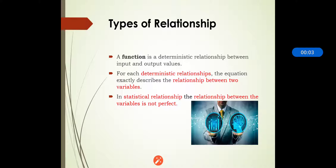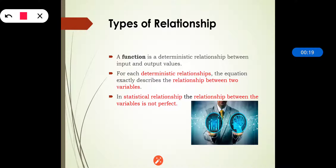In this section we will see the types of relationships, multiple regression and all. Before proceeding we must clarify what types of relationships are necessary, which are mainly known as deterministic relationship or the functional relationship.